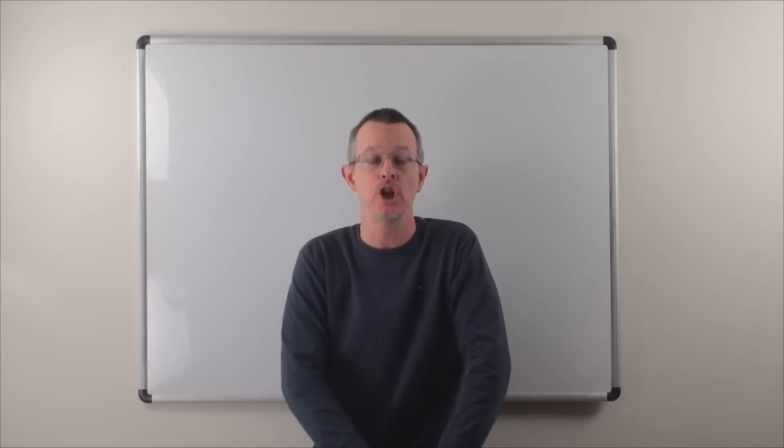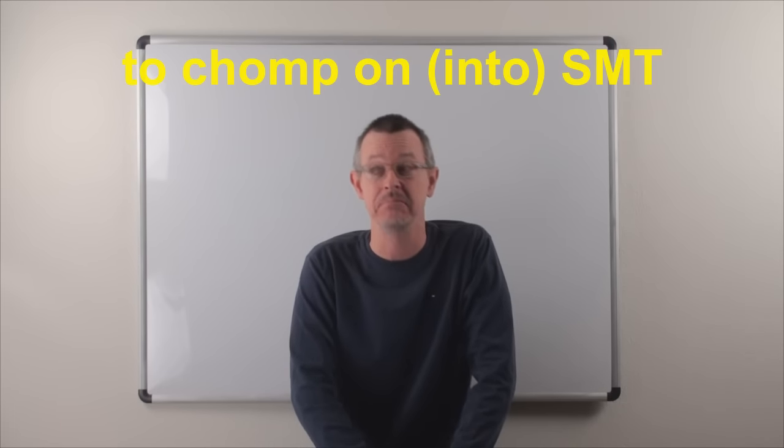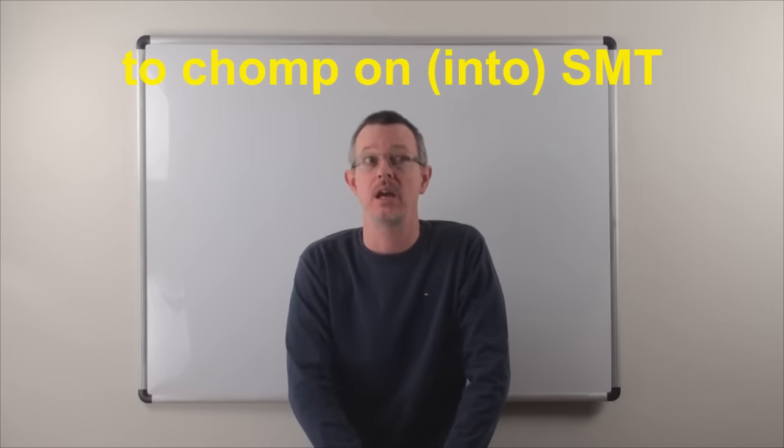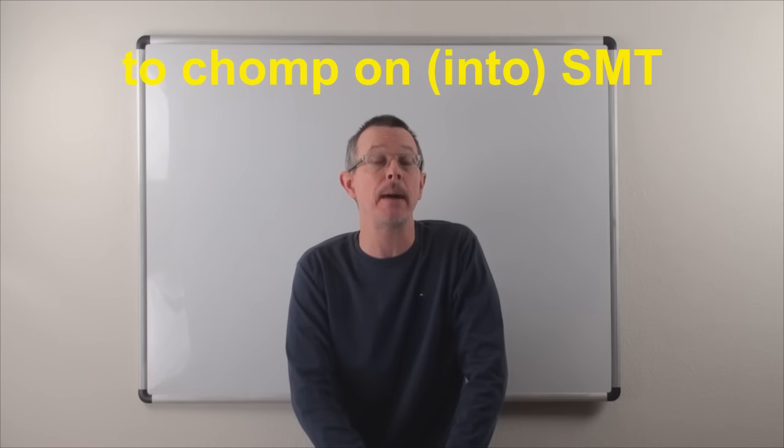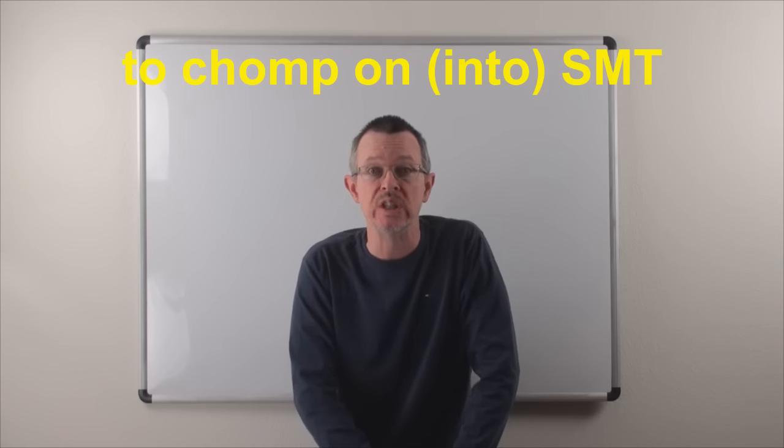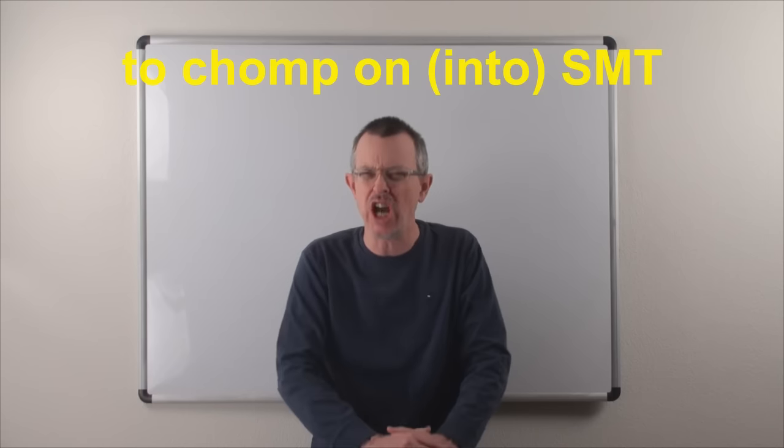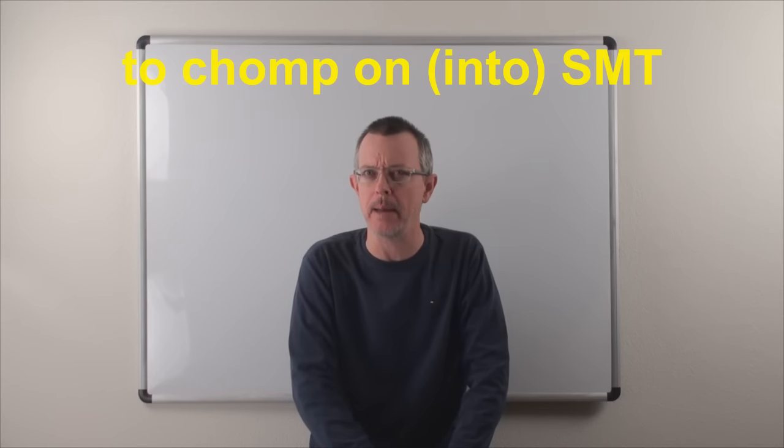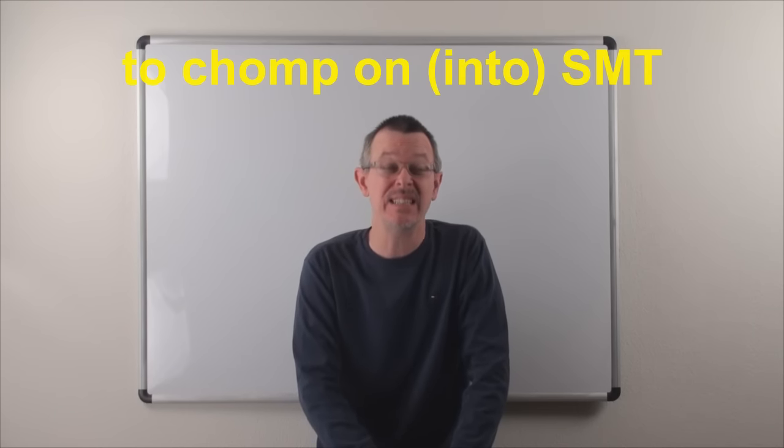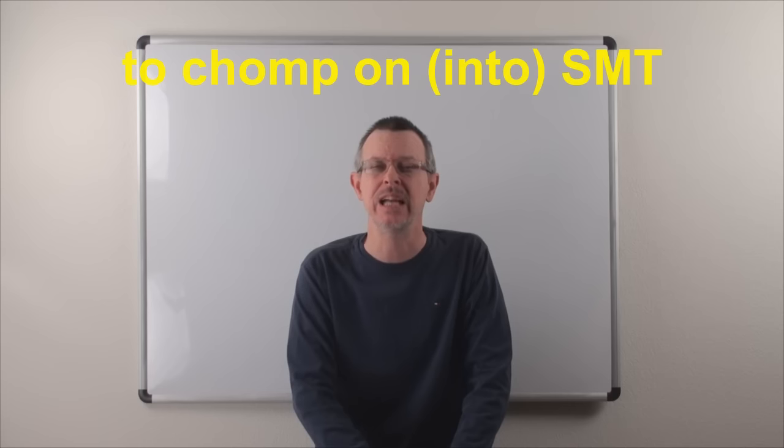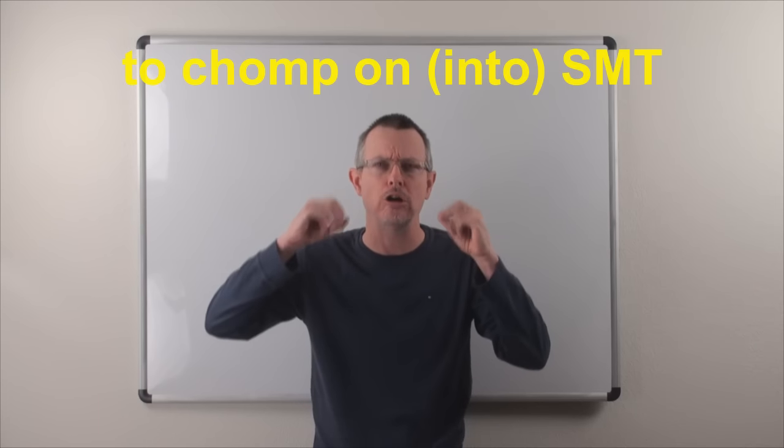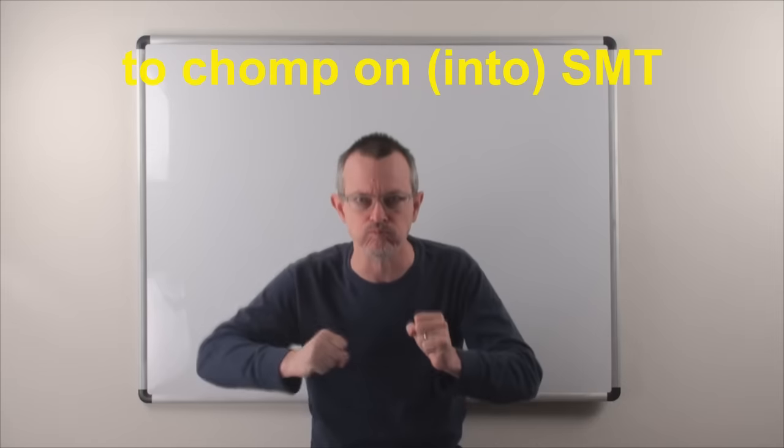The verb is to chomp on something, and the variation would be to chomp into something. So chomp is the key verb, c-h-o-m-p, and to chomp simply means to chew. But it's not just chew, it's a big chew, a chomp.